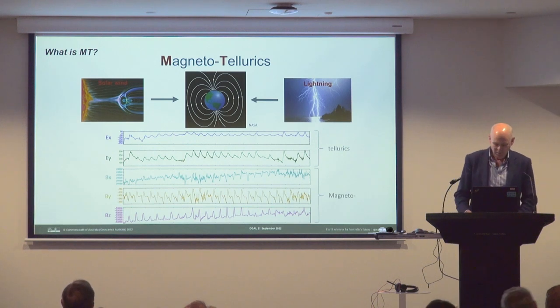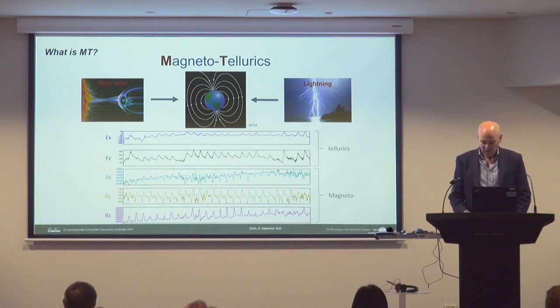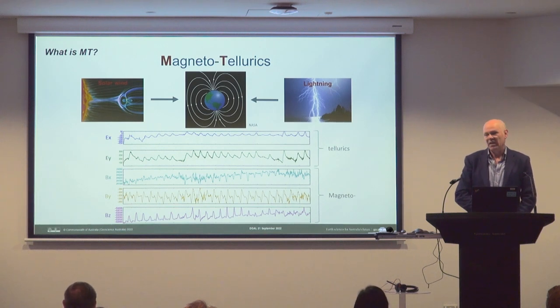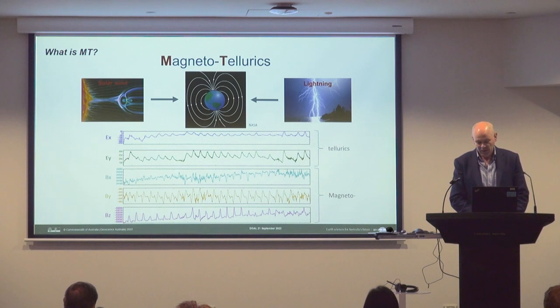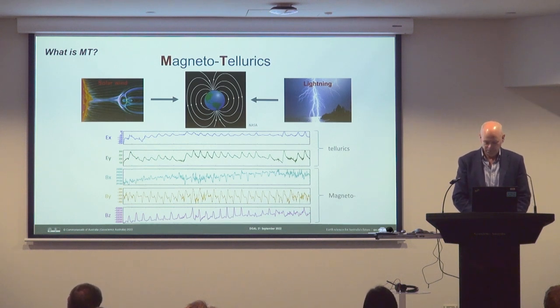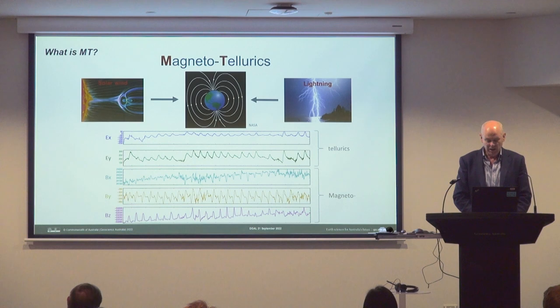Our planet is surrounded by a magnetic field. It helps to protect us from the solar wind, and many species use it for navigation. This magnetic field is undergoing continuous change. Long-period or low-frequency changes can have periods of a few seconds, minutes, or hours, and are caused by the impact of the solar wind on our magnetic field. Very short-period or high-frequency changes of less than a second are caused by lightning generated by thunderstorms. These magnetic field changes cause electric currents to flow in good conductors of electricity, including satellite circuits, electrical power lines, pipelines, and, importantly, rocks.